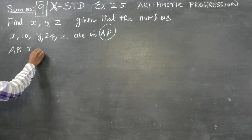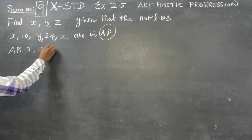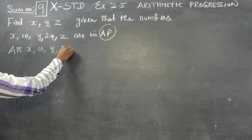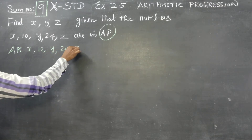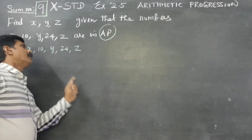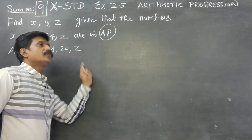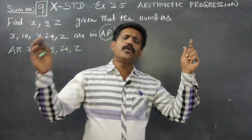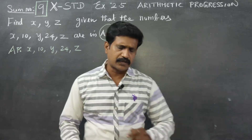The given sequence in arithmetic progression is: x, 10, y, 24, z.